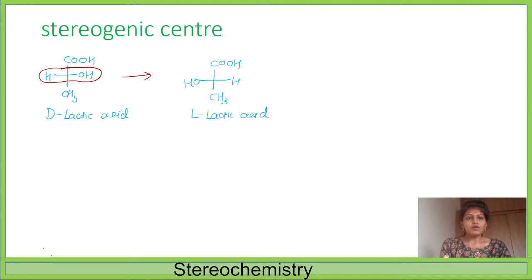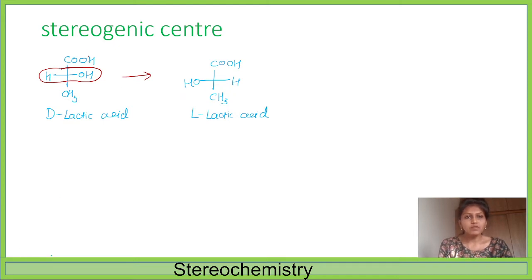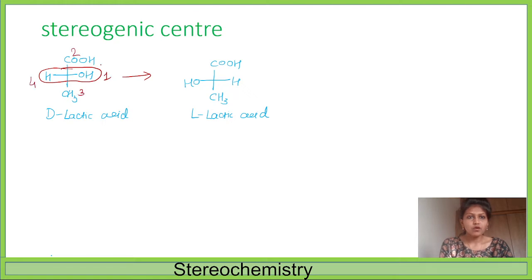Now suppose we want to find out whether it is R or S. We can find this out using the CIP rule. Assign priority numbers: this is number one, this is number two, this is number three, and four. Now rotate from one to two to three, ignoring four.